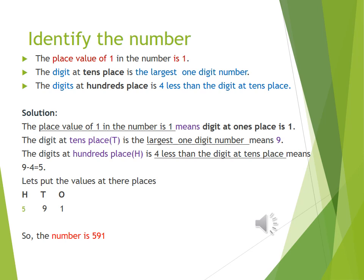The digit at 100's place is 4 less than the digit at 10's place. Digit at 10's place is 9, so 9 minus 4 equals 5. Now let's put the values at their places. At 100's we got 5, at 10's we placed 9, and at 1's the value is 1. So the number is 591.